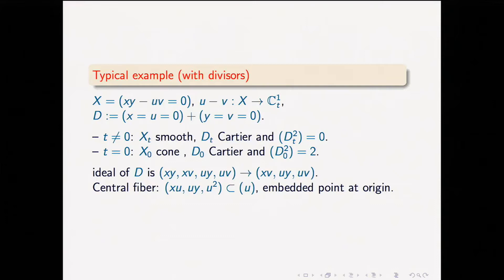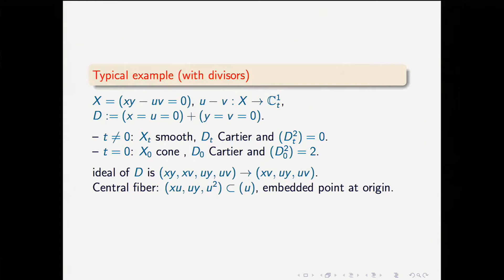If I look at the central fiber, u equals v, and the ideal becomes generated by x·u, u·y, u², which is contained in u with quotient of length 1. So this ideal has an embedded point — an embedded prime exactly at the origin — and if I get rid of it, I get u. That means the divisor sees this, but the ideal theory gives a smaller ideal. The problem is: if I restrict as a divisor I get the ideal generated by u, but restricting the ideal gives embedded points.